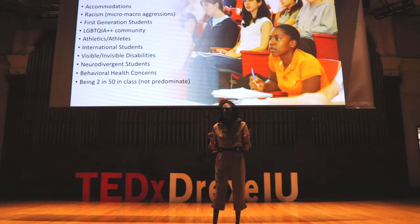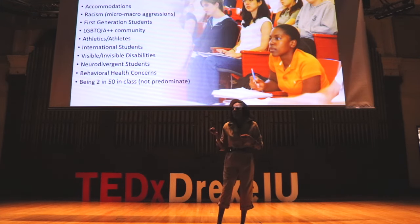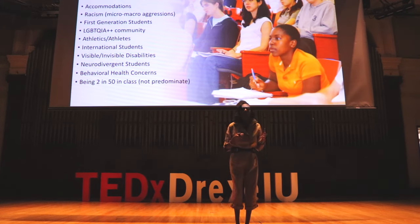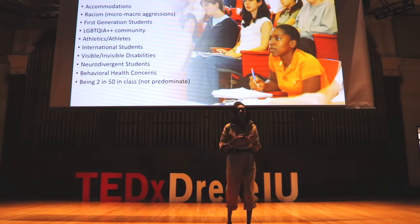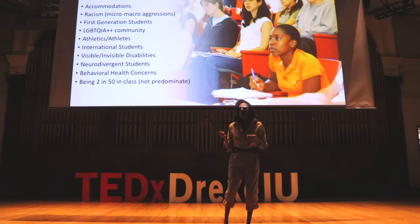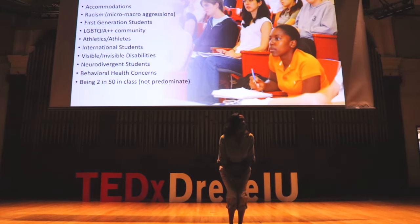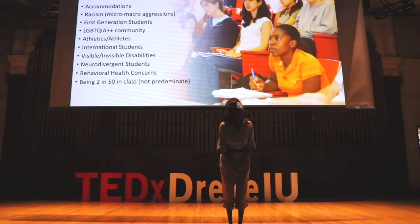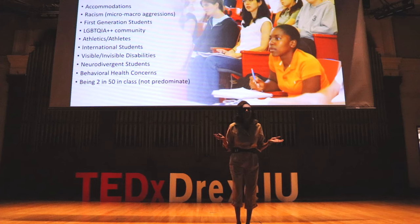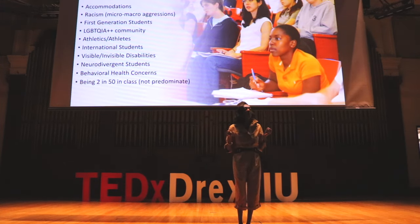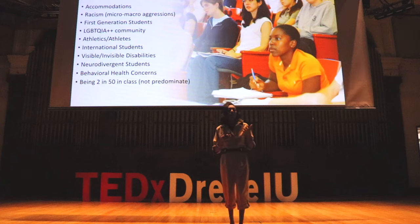One of them might be accommodation. Accommodation is when someone needs extra support but maybe didn't ask for the accommodation. Maybe it's looking at racism or first-generation students. Also the LGBTQIA++ community, individuals who are athletes, or individuals dealing with behavioral health concerns. And also what I call 2 in 50 — when students come into class, sit down, and pray that someone on whatever diversity measure shows up. The student might be thinking, maybe phenotypically someone's going to show up looking like me. But 2 in 50 means that you're not predominant, and that can also be a pain point.